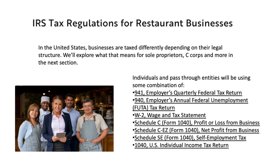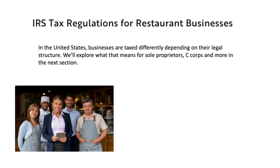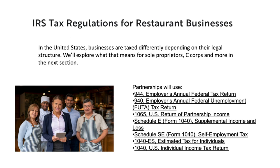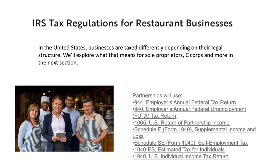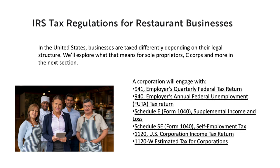Individuals and pass-through entities use some combination of 941s, 940s, W-2s, Schedule C's, Schedule SE's, and 1040s. Partnerships use 944s, 940s, 1065s, Schedule E's, Schedule SE's, and 1040s. Corporations engage with 941s, 940s, Schedule E's, Schedule SE's, and 1120s.